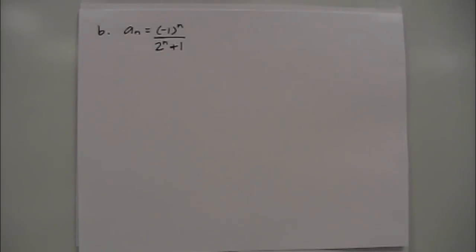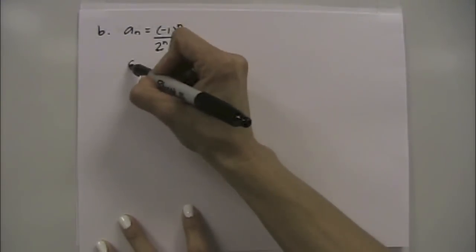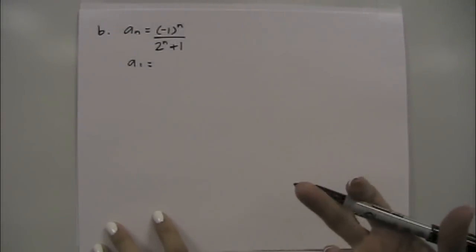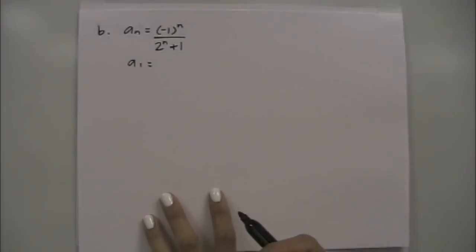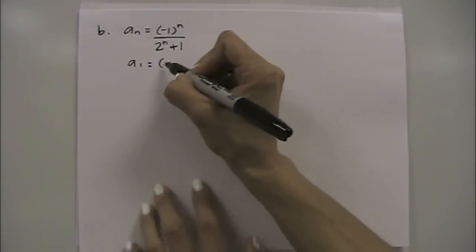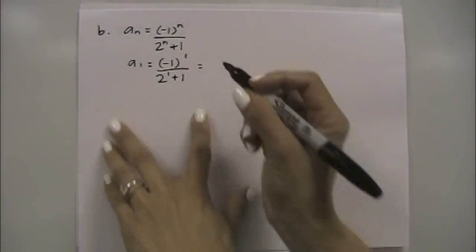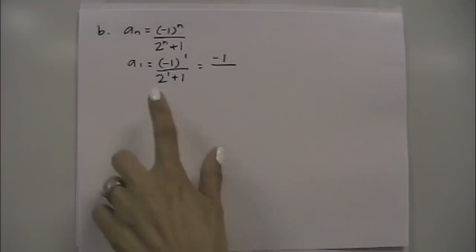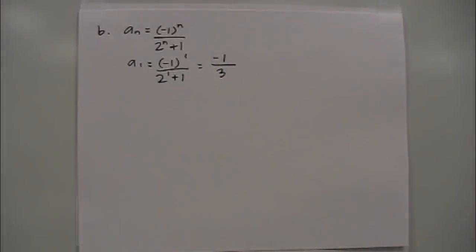Part B: a sub n equals negative 1 to the n, all divided by 2 to the n plus 1. We still want the first four terms, so we start by plugging in 1. Sometimes it'll specify to start with a sub 0, so four terms would be a sub 0 through a sub 3. But since it didn't specify otherwise, we start with a sub 1. In the numerator you get negative 1 to the 1, or just negative 1. In the denominator, 2 to the 1 is 2, and then you add 1, giving you the fraction negative 1 third.